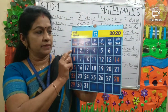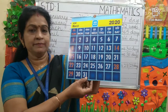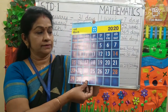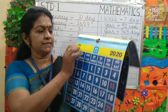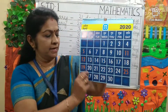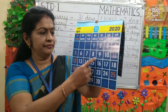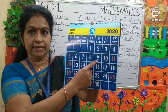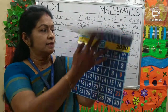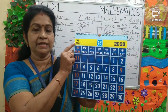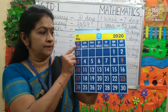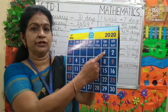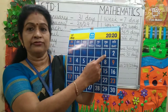Next is March. Can you tell me how many days March has? It has 31 days. Next is April. April has 30 days. Can you tell me which day is 9th April? It is Thursday. Next is May. May is the fifth month of the year and it has 31 days. Can you tell me which day is 1st May? It is Friday.